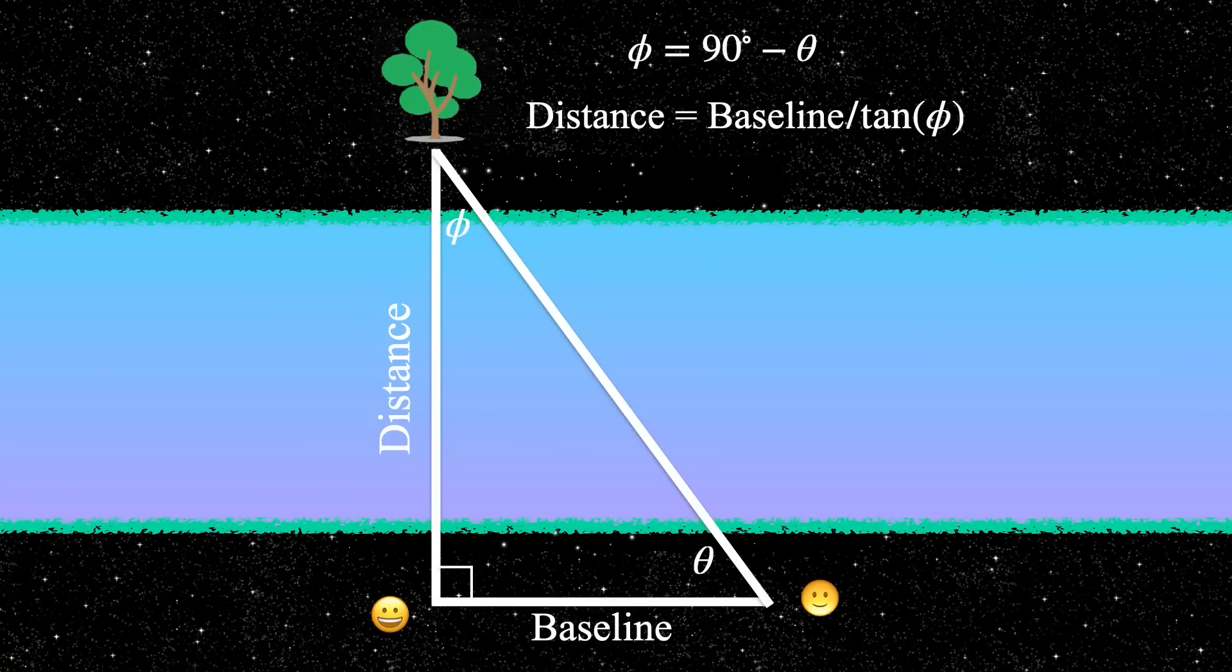Then we make a 90 degree angle and walk, say, 200 yards away along that 90 degree angle. At the other end of the baseline, you put down your telescope again and sight line to the tree, and you find that the angle between the sight line at the second location and the baseline is not 90 degrees. It's less than that.